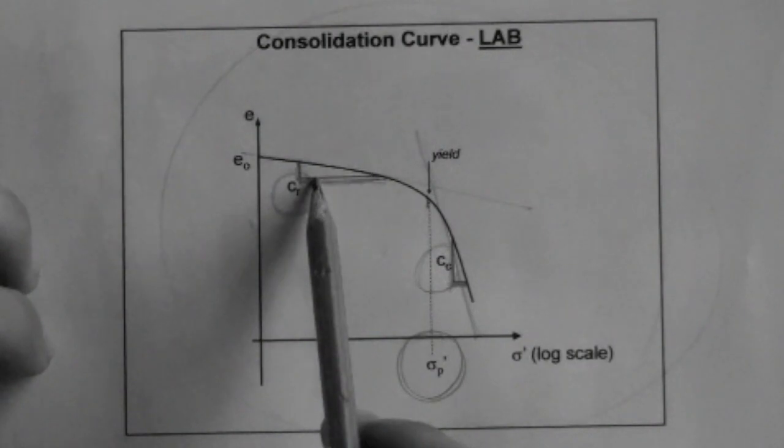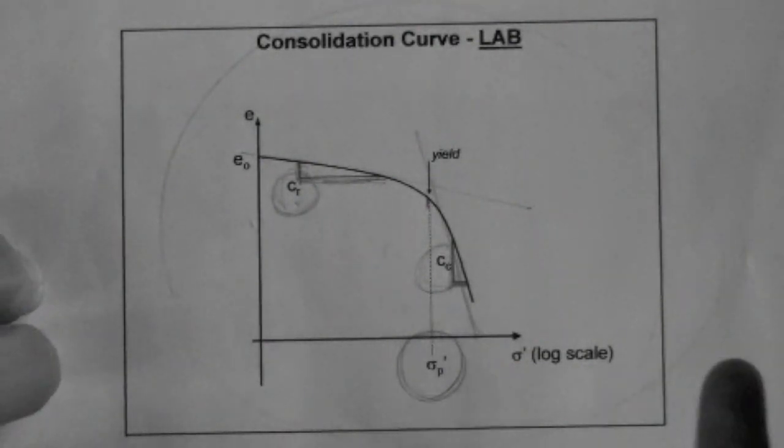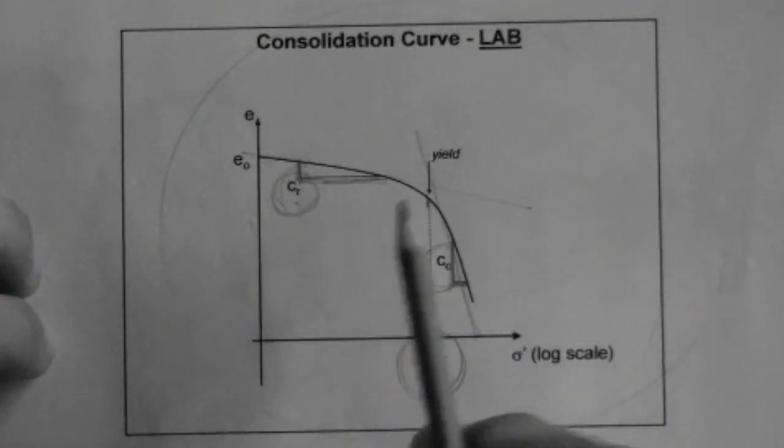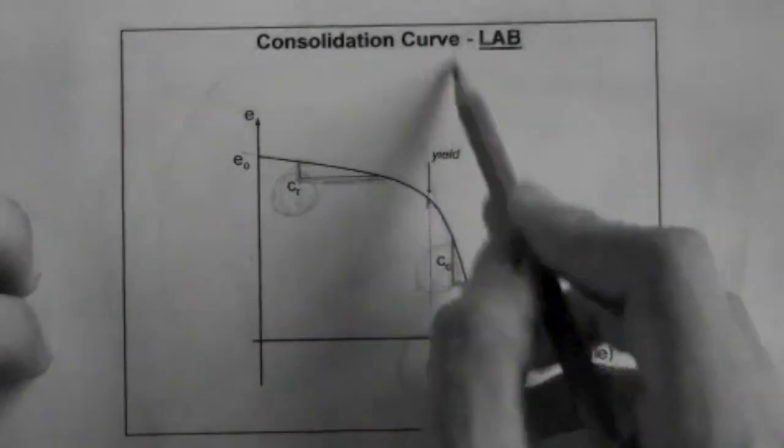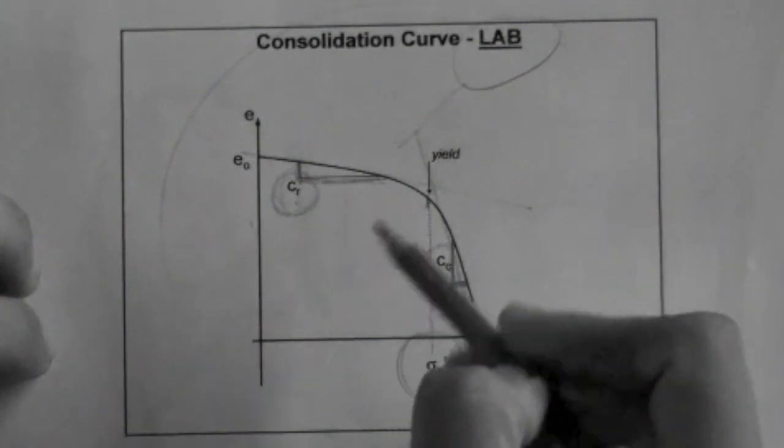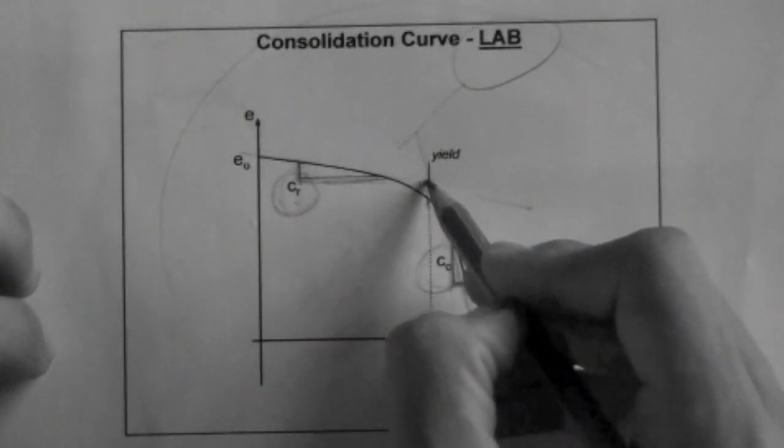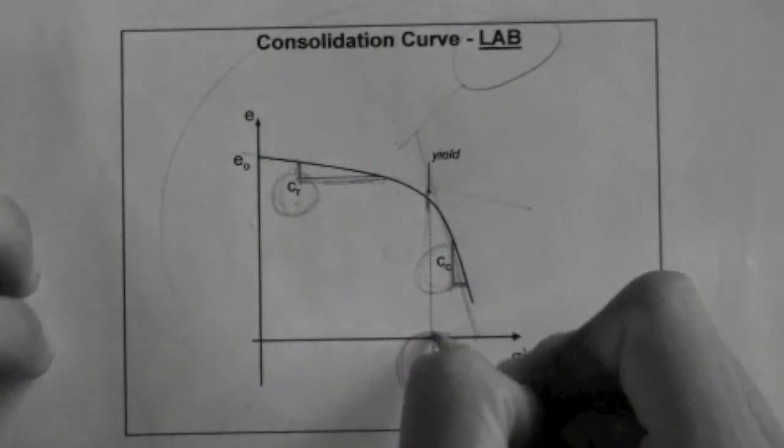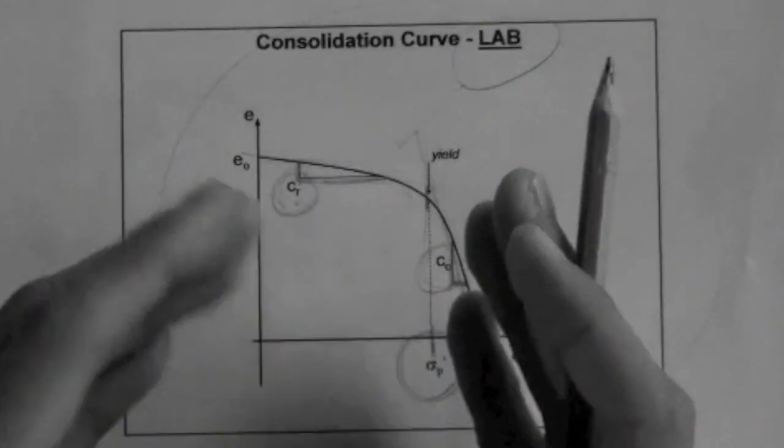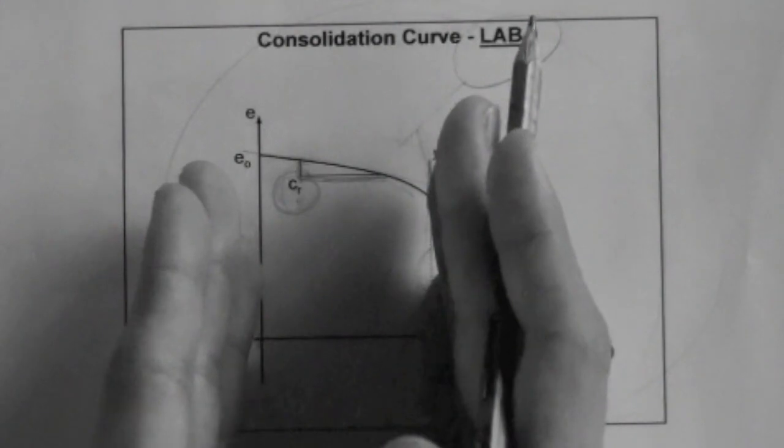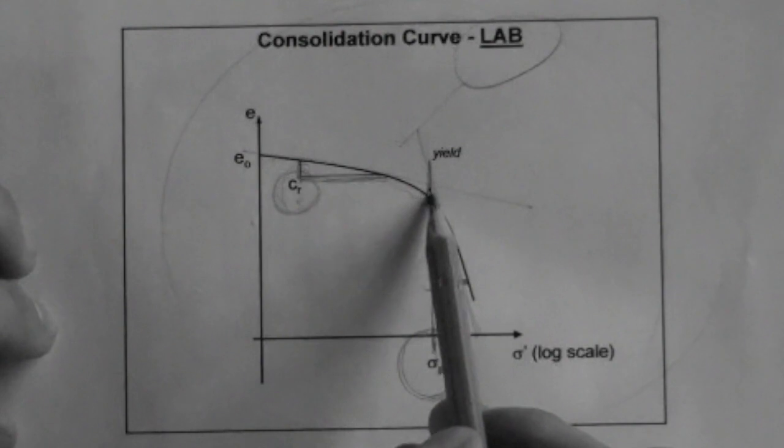Now why is this one called recompression index, and why is this one just called compression? Well, recompression means compression again. So we give the slope this name because we know that the soil, before we load it in the lab, to get this curve, the soil has felt stresses of all magnitudes, except magnitudes above this point, this stress. So if the soil is compressed within this range here, we know that it has been recompressed because the maximum that it has ever felt is this value.